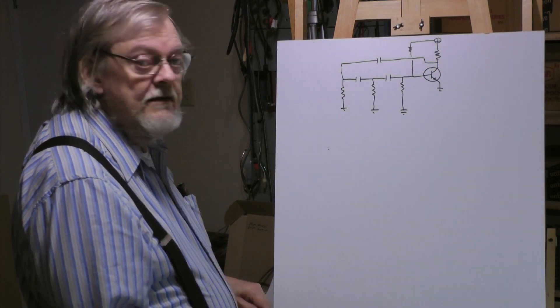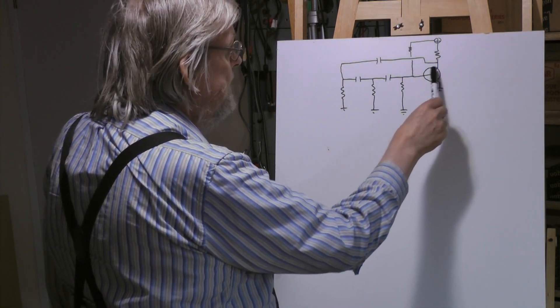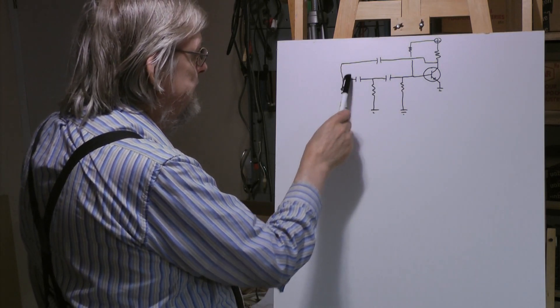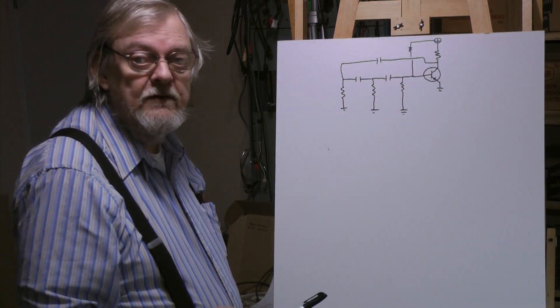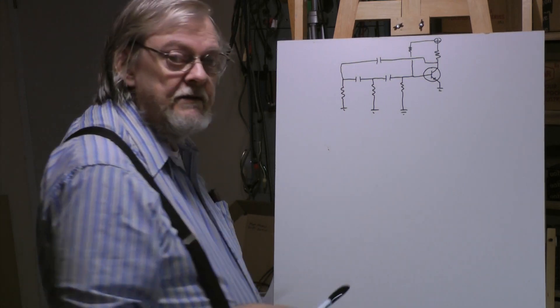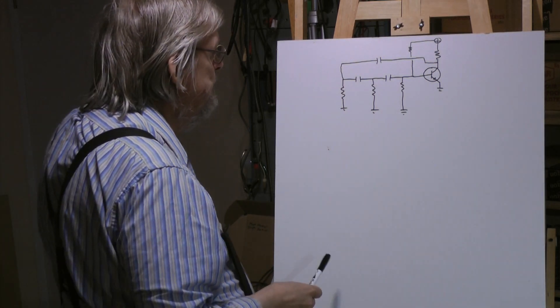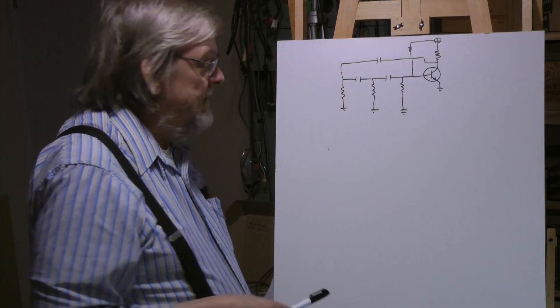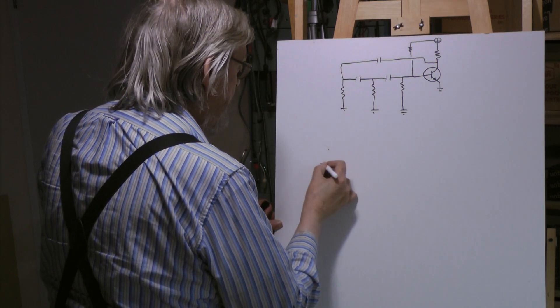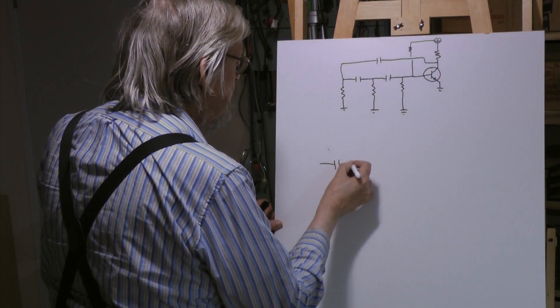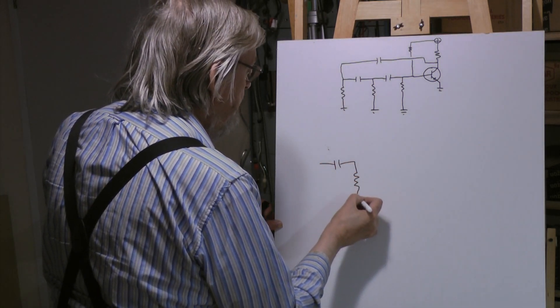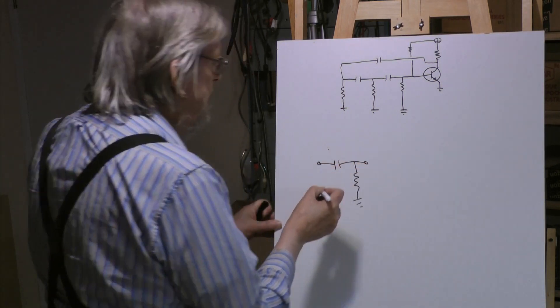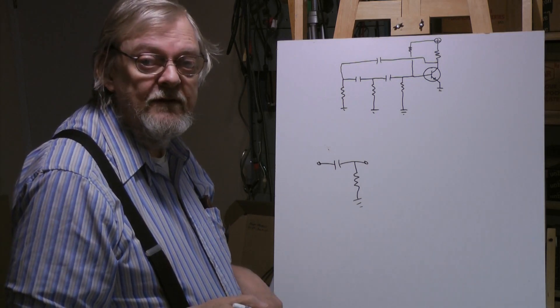Okay so the idea is the transistor has a 180 degree phase shift right, and each one of these circuits gives you 60 degrees for a total 360 which is positive feedback. But why 60 degrees? Well actually you have a circuit like this you can have any phase shift you want because it depends on the frequency.